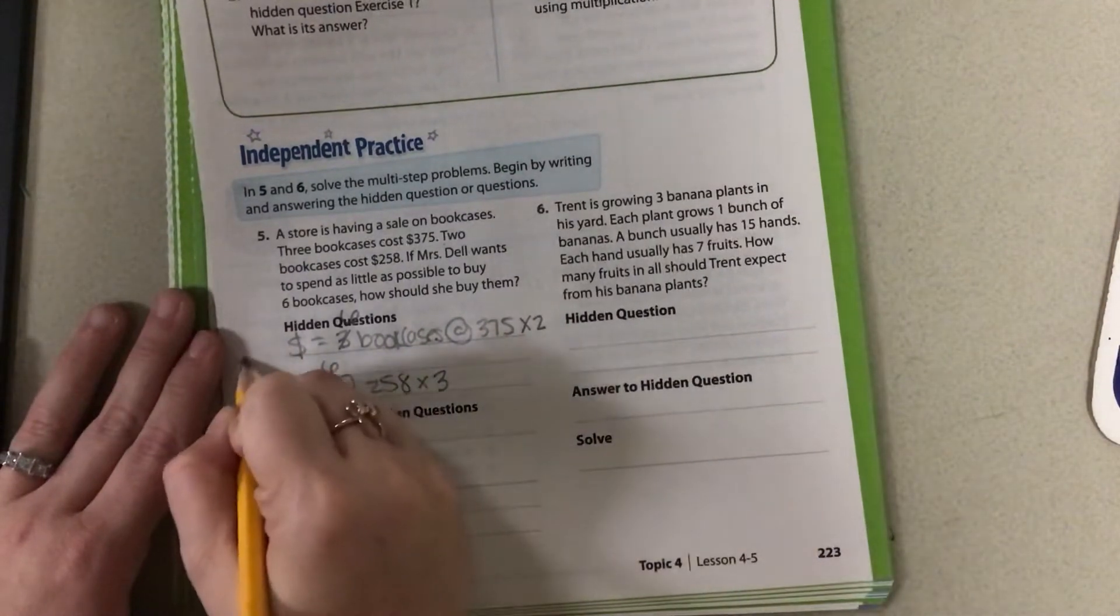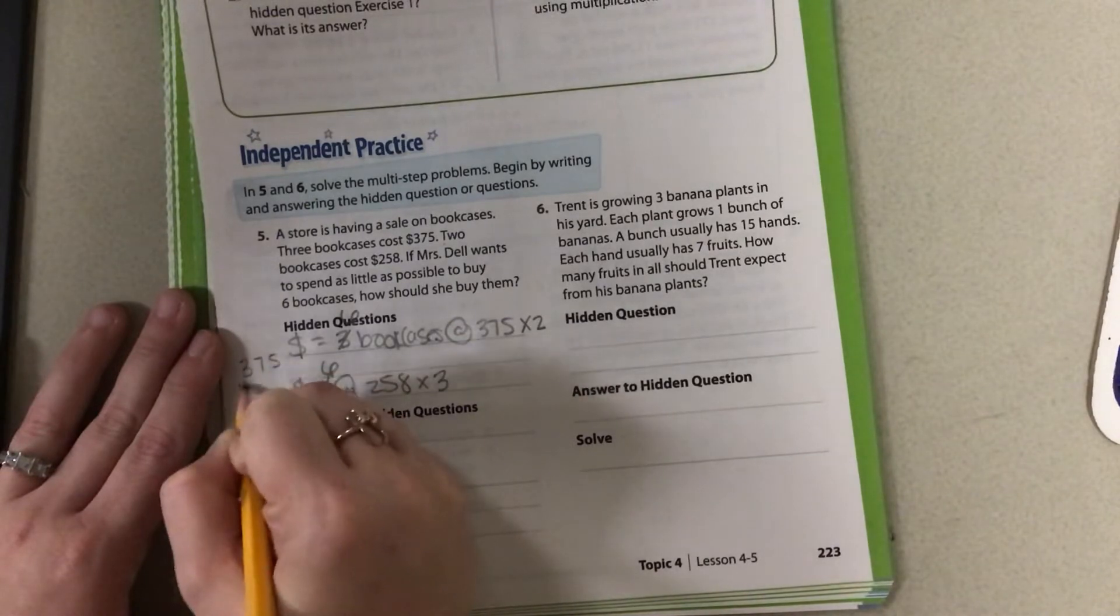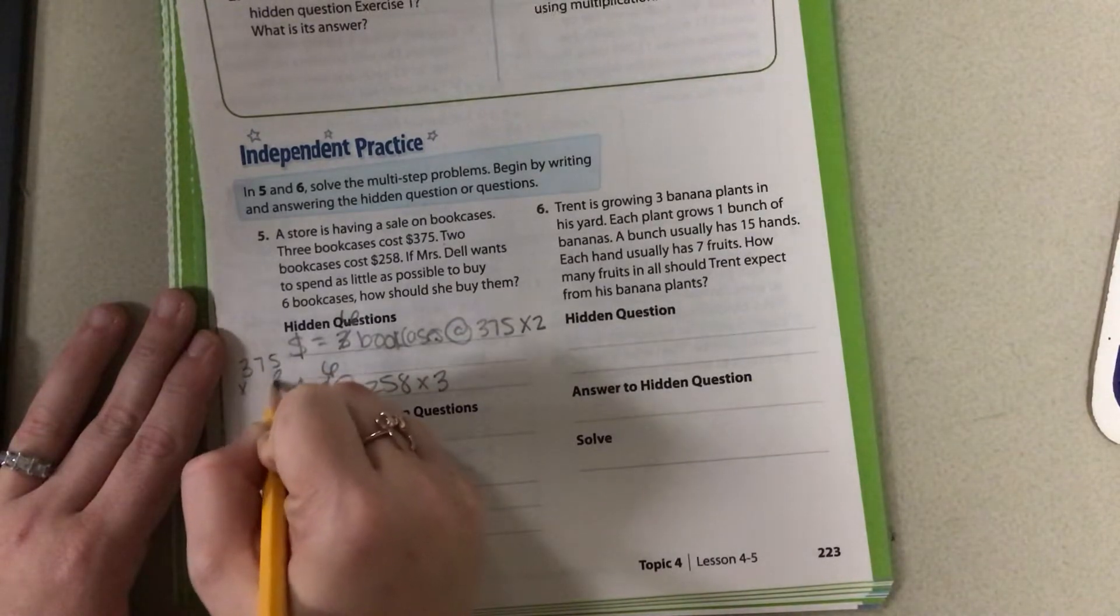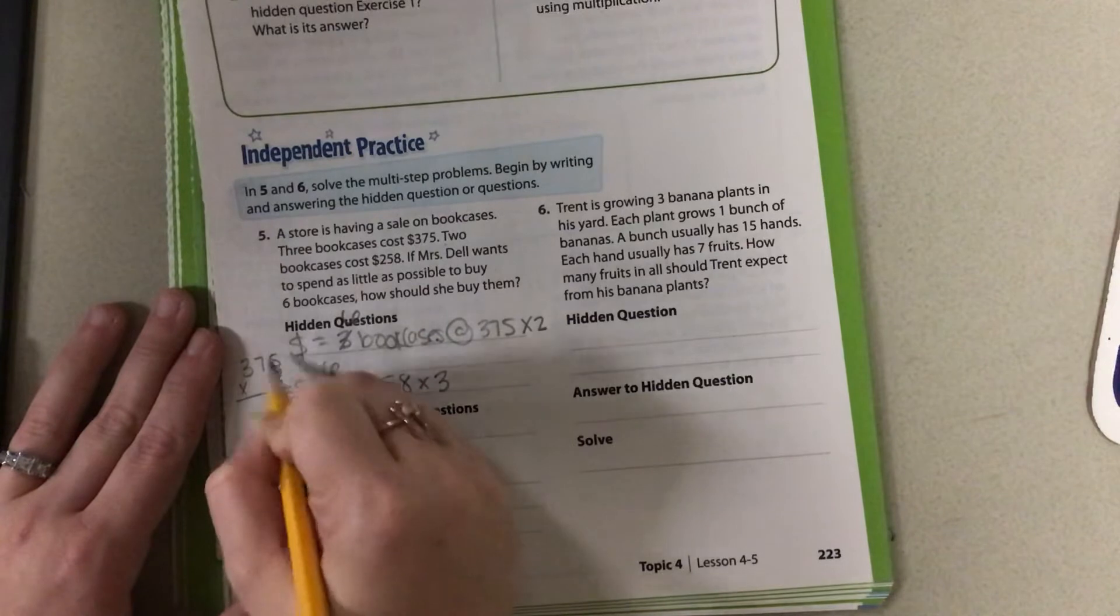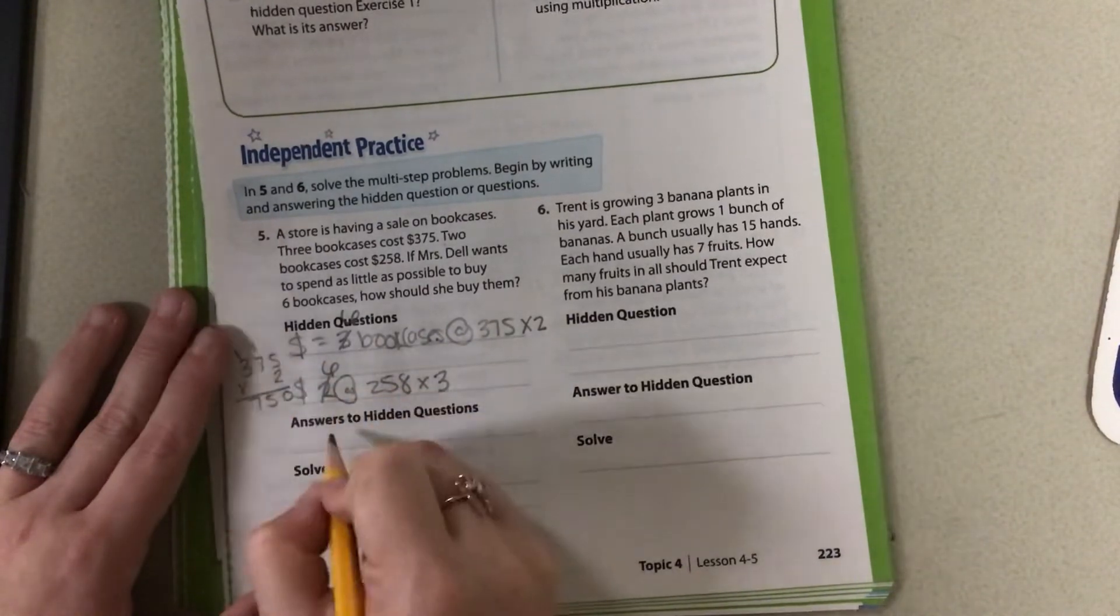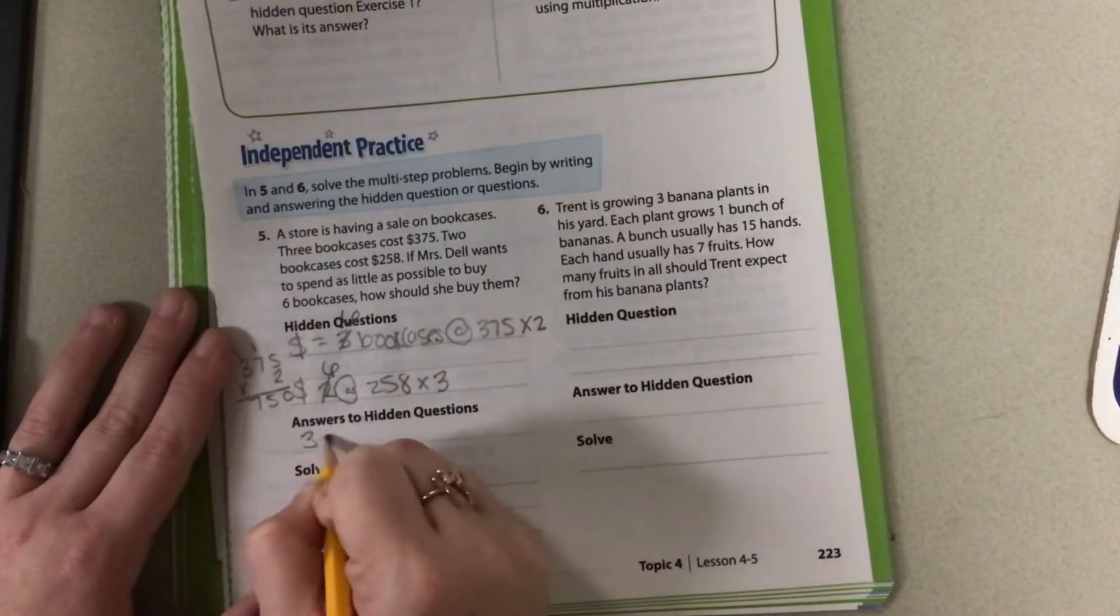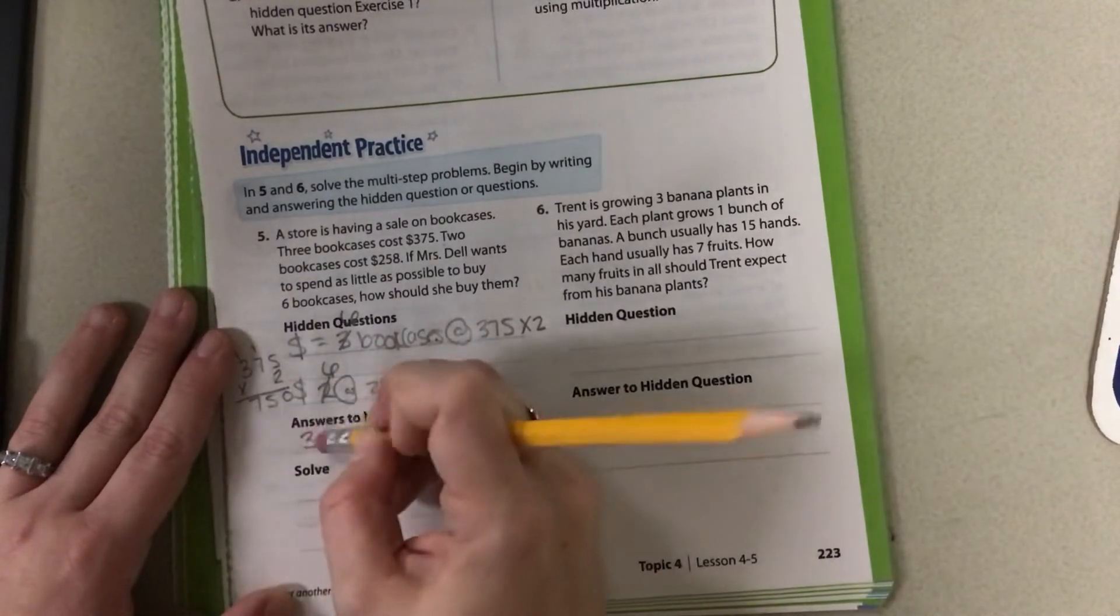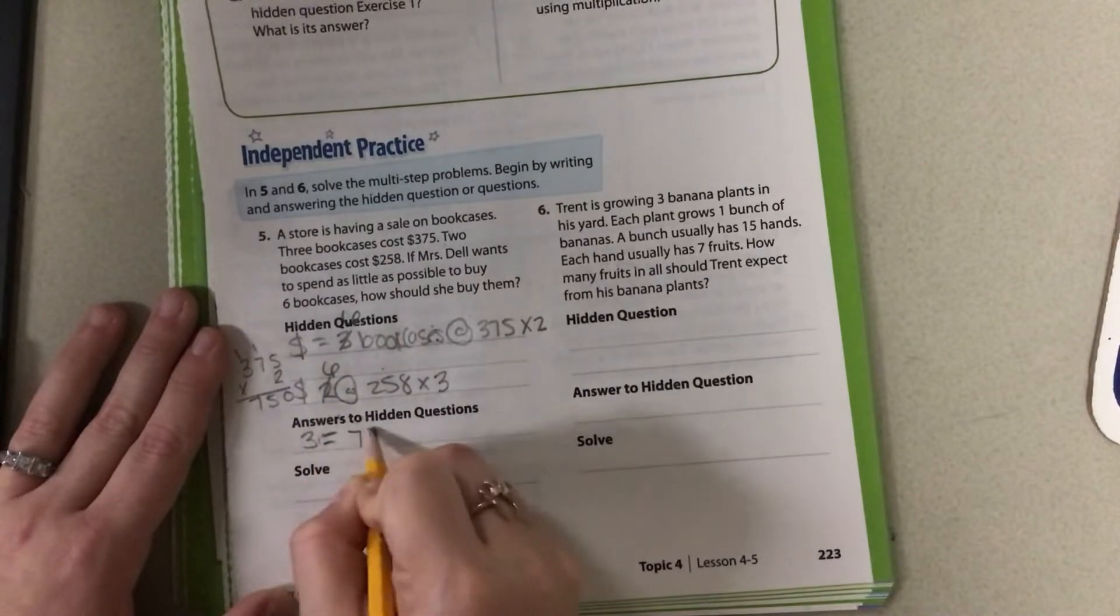So solving it, I can come over to the side, do 375 times 2. That gives me 10, 14, 15, 6, 7. So for the 3, it's going to equal 750.